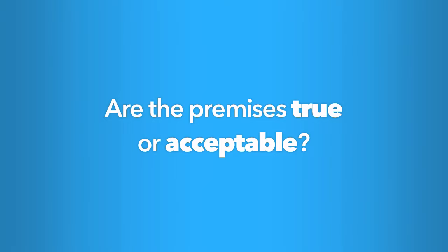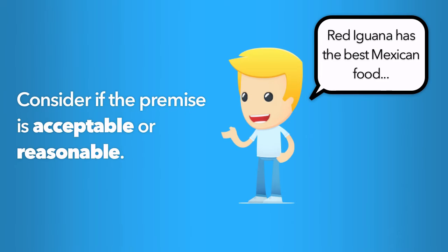First, with inductive arguments, you may find premises that are not easily assessed as true or false. Rather than facts, you will often have matters of opinion. The assertion that the Red Iguana has the best Mexican food is a matter of opinion over which people may disagree. In evaluating this argument, you need to consider whether this premise is acceptable. You might look at restaurant reviews or published lists of best of Salt Lake City, or poll your friends to see how many people agree with this opinion.